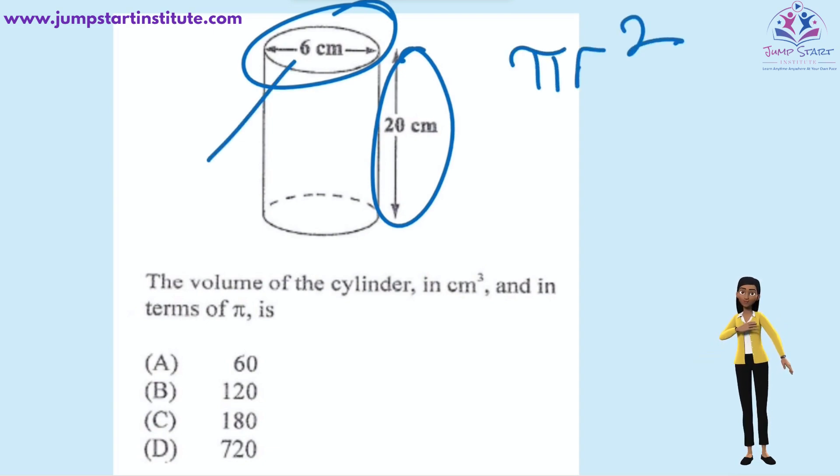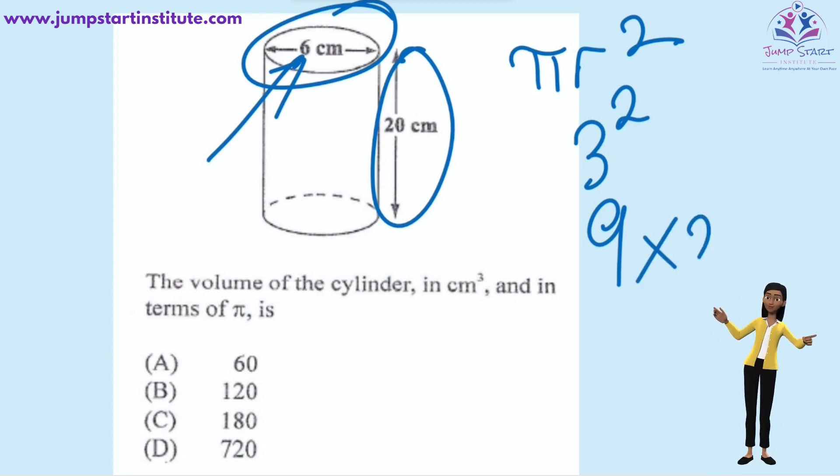The diameter is 6 centimeters. Therefore, r squared would be 3 squared, which is 9. Multiplying this by the height of 20 centimeters, this gives us 180. Therefore, the answer is C, 180 pi.